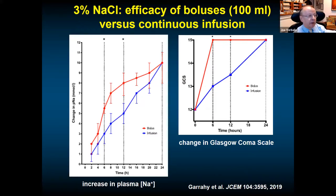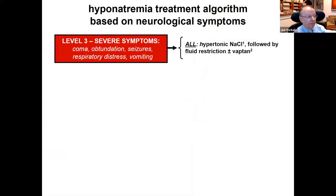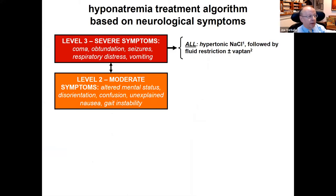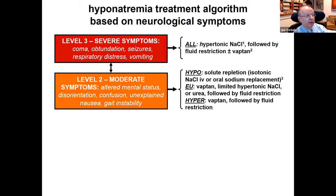For moderate symptoms — altered mental status, disorientation, confusion, unexplained nausea, gait instability — you have more time. A limited hypertonic saline bolus or infusion can be used but may not be necessary since these are not life-threatening symptoms. Treatment should follow volume status: hypovolemic patients get isotonic saline or oral sodium; euvolemic patients can receive hypertonic saline, a vaptan, or urea plus fluid restriction; hypervolemic patients with heart failure are best treated with a vaptan.